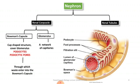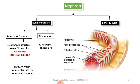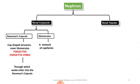The cells of the Bowman's capsule are called podocytes. These podocytes have a capillary-like structure that is used to filter waste products. The podocytes help in filtration. The second main part of the nephron is the renal tubule.